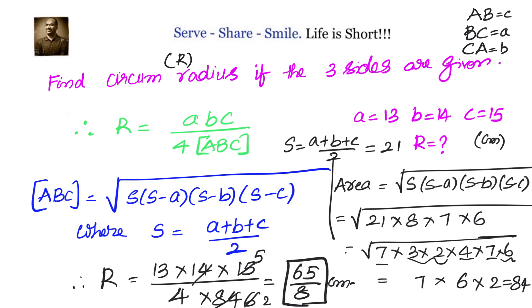In this session we learned how to find the circumradius given the three sides of a triangle. For a triangle with sides a, b, c: R = (a × b × c) / (4 × area), where area is calculated using Heron's formula: √(s(s−a)(s−b)(s−c)), with s = (a+b+c)/2. We also worked through a numerical example to verify the formula.